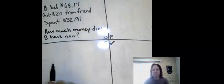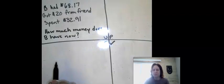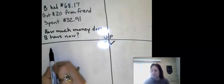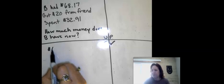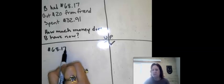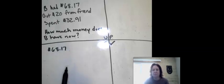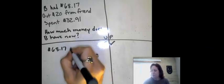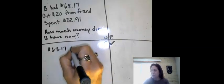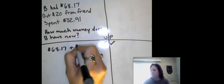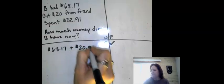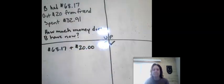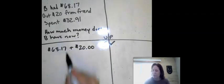Okay, so let's think about what's going on in this problem. We know that Barry starts off with $68.17 in his pocket. But his friend comes along and gives him $20 that he owed him.